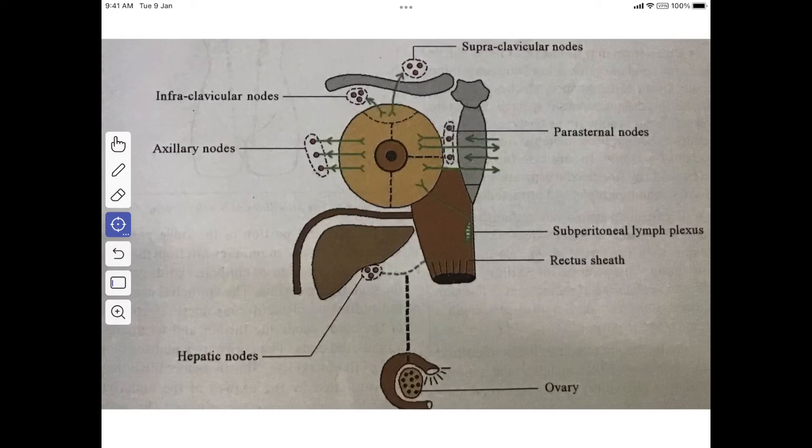Next, we'll see the lymphatic drainage of the overlying skin excluding the areola and nipple. These lymphatics pass in a radial manner and drain into the following peripheral nodes: from the outer part, they drain into the axillary group; from the upper part, they drain into the supraclavicular group. Some vessels reach the cephalic nodes in the deltopectoral triangle and then into the apical group of axillary lymph nodes after piercing the clavipectoral fascia.